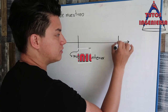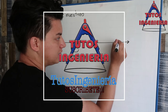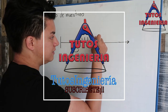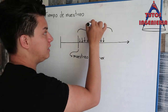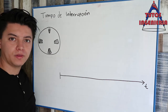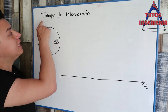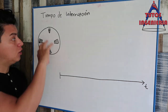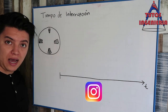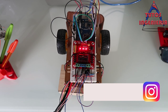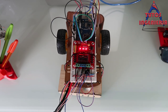Hi everybody. In this video we begin with the programming explanation. Firstly we're going to test the motors, the encoders, the interruption functions, and the code for the sample time and the interruption timestamp. So let's get to it.